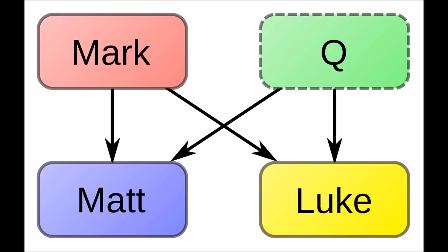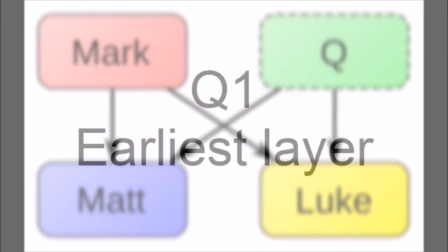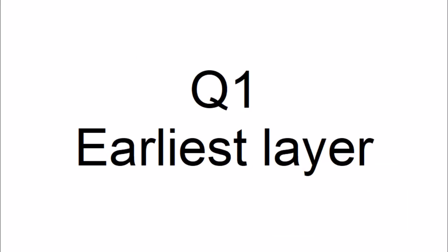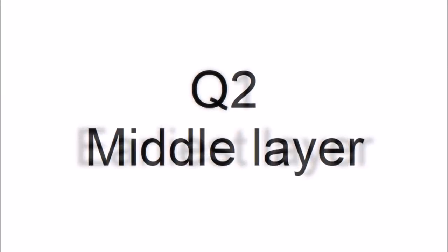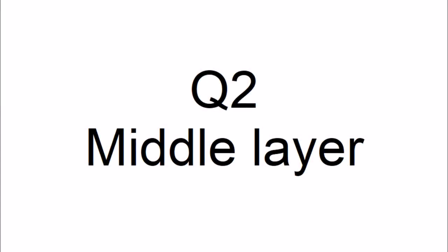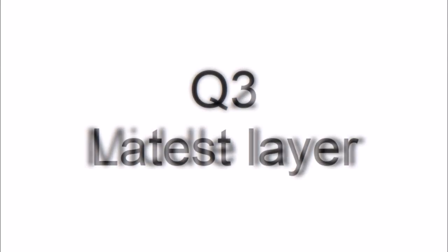There are, of course, counters to the argument from Q. For one thing, the two-source hypothesis which involves Q may be a majority view among scholars, but by no means has it attracted what could be called a consensus. There are many dissenting voices, with good reason for their dissent. Another objection is that the dissection of Q into three chronological layers is primarily dependent on style and content. Q1 is, in essence, a collection of aphorisms and instructions to Jesus' individual followers. In Q2, the style is one of an authoritative prophet making pronouncements to them and to the whole world. The Q3 layer contains the smallest amount of content, limiting stylistic analysis, and one reason for identifying it as a separate strata is that it introduces the idea of Jesus as the Son of God.